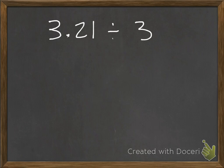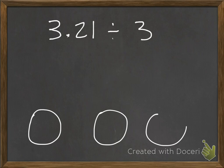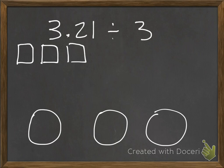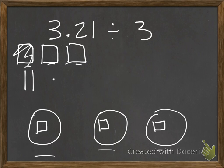Here's the next example: 3 and 21 hundredths divided by 3. I make three groups and use base 10 blocks to represent 3 and 21 hundredths — three whole boxes, 2 tenths, and 1 hundredth piece. I need to share these blocks equally into the three groups. Starting with my largest pieces, the whole numbers: because I have three whole blocks and three groups, I can place one whole into each group without needing to regroup.